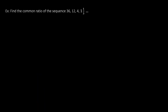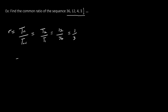As an example, let's find the common ratio for the sequence 36, 12, 4, 1/3. Since R = Tn/Tn−1: T2/T1 = 12/36 = 1/3. Checking T3/T2 = 4/12 = 1/3. So the common ratio R = 1/3. Just like the common difference must be the same throughout a linear sequence, the common ratio must also be the same throughout an exponential sequence.